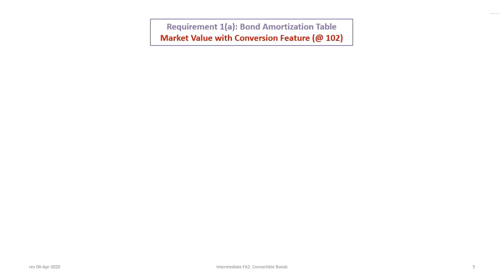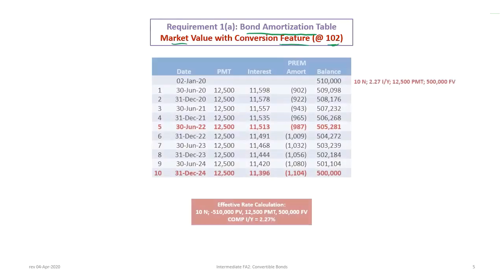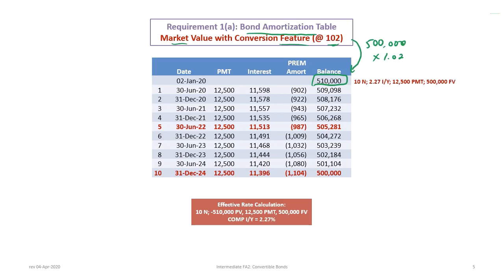Next we'll show a bond amortization table based on the market value — or present value — with the conversion feature at 102. In this problem, we're told the bonds sold at 102. If we take $500,000 times 1.02, that's how we get $510,000 in bonds, because those bonds are sold with a conversion feature. If the bonds did not have a conversion feature they would have sold for the present value shown previously. Because they do have a conversion feature, it makes the bonds a little more attractive and more valuable.